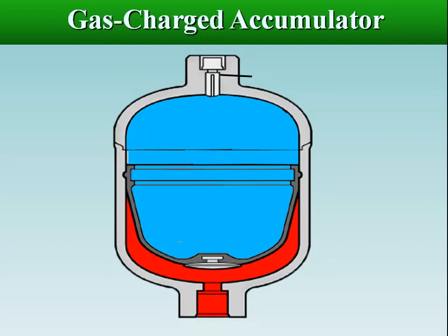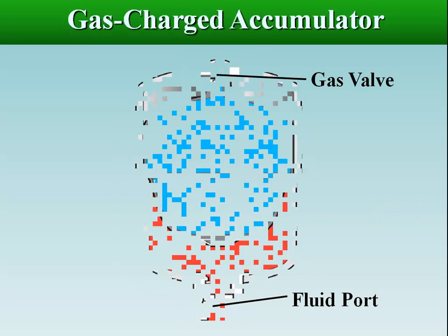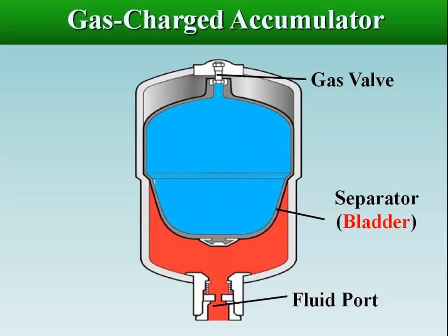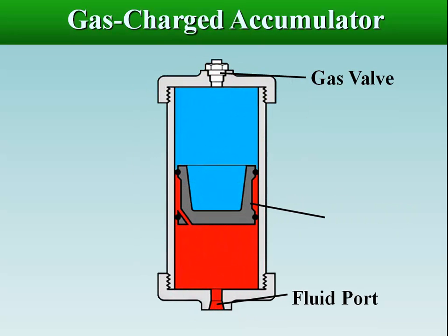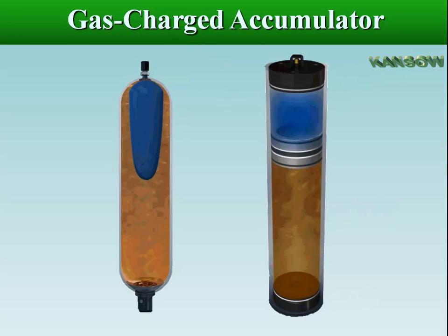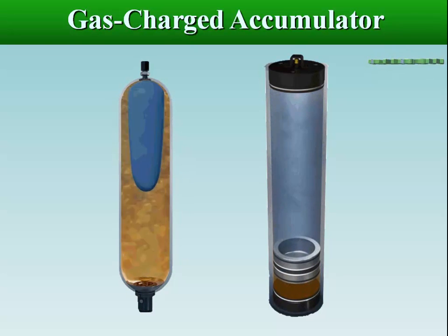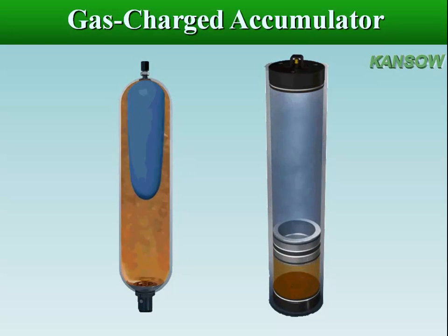A gas-charged accumulator consists of a fluid section and a gas section with a separator between the two sections. As the volume of the compressed gas changes, the pressure of the gas and the pressure of the fluid change inversely.